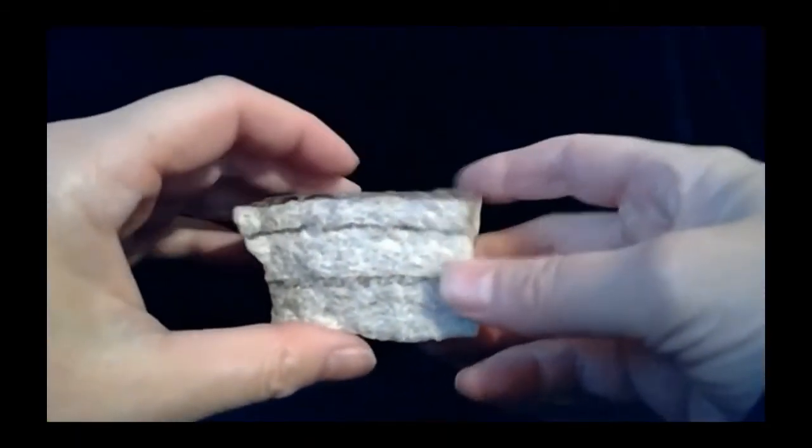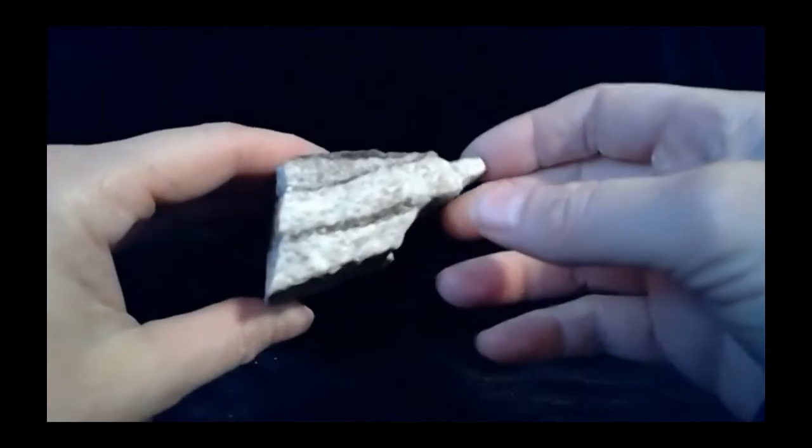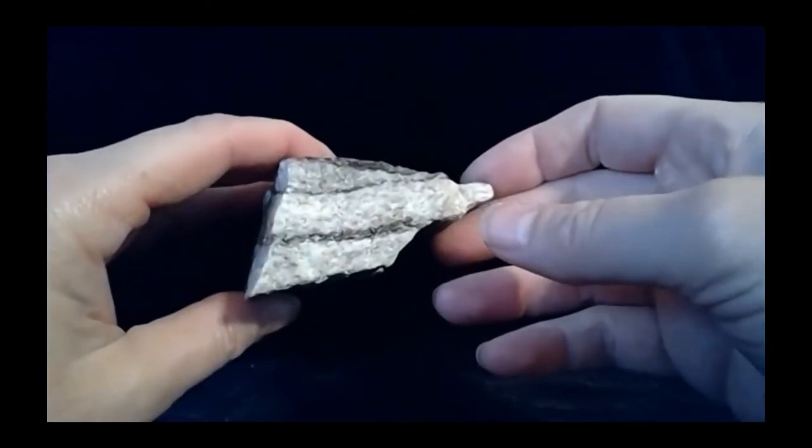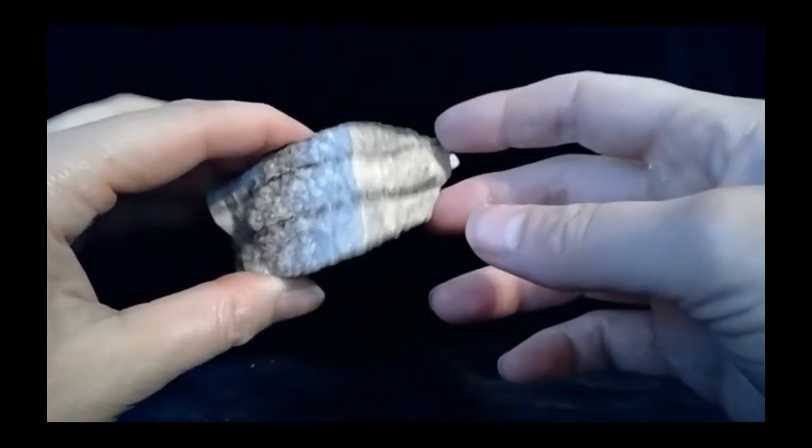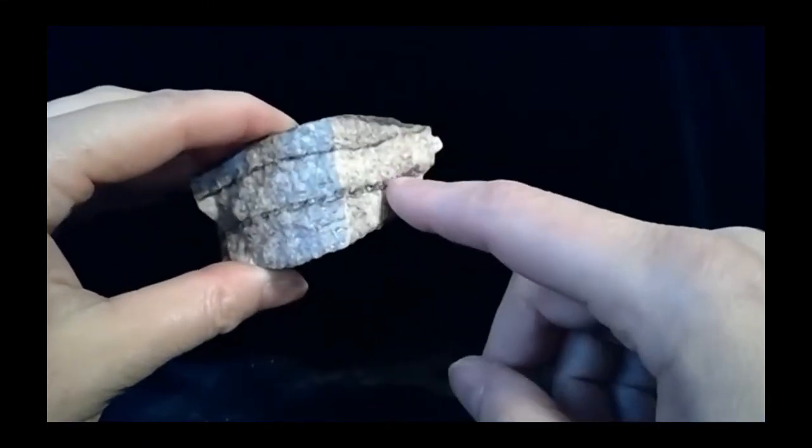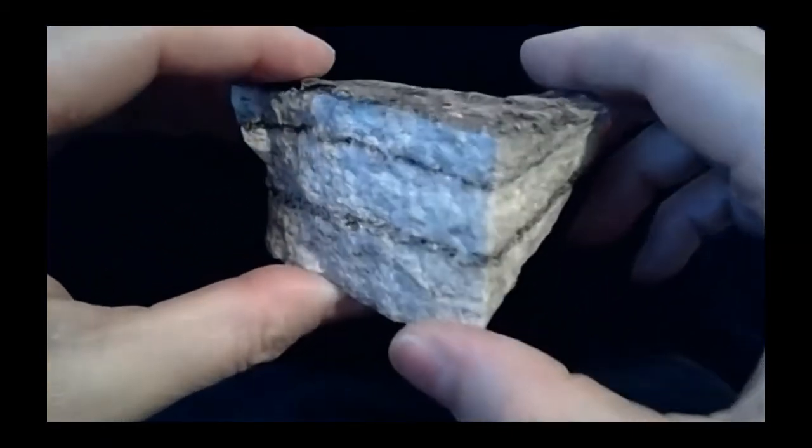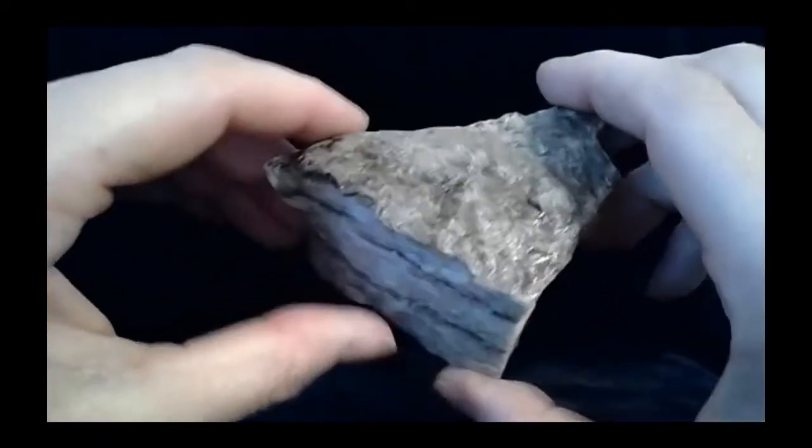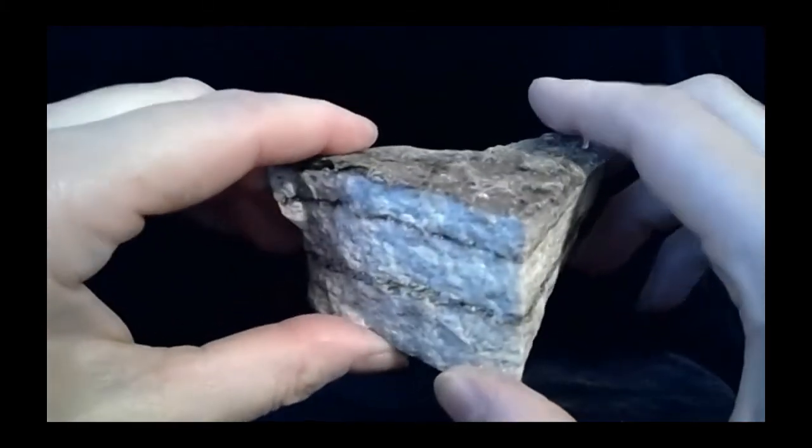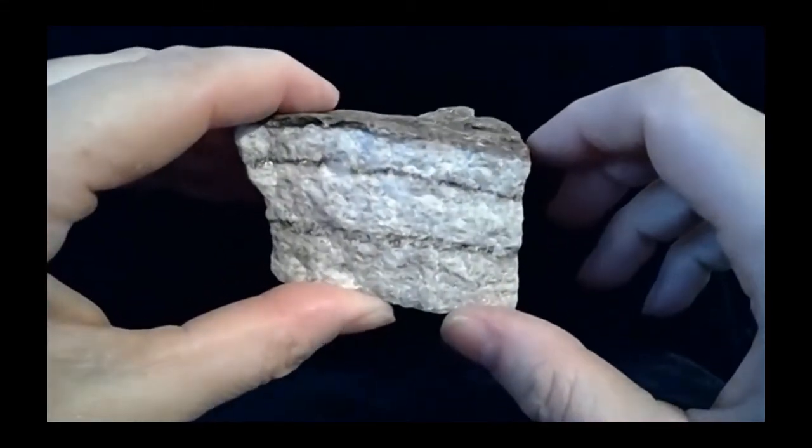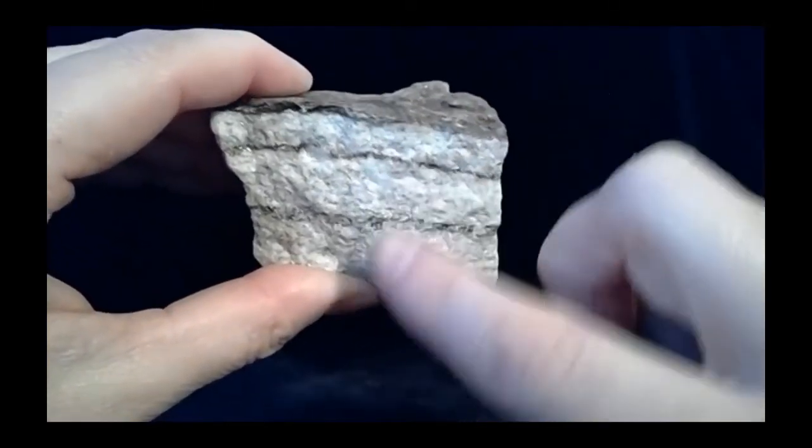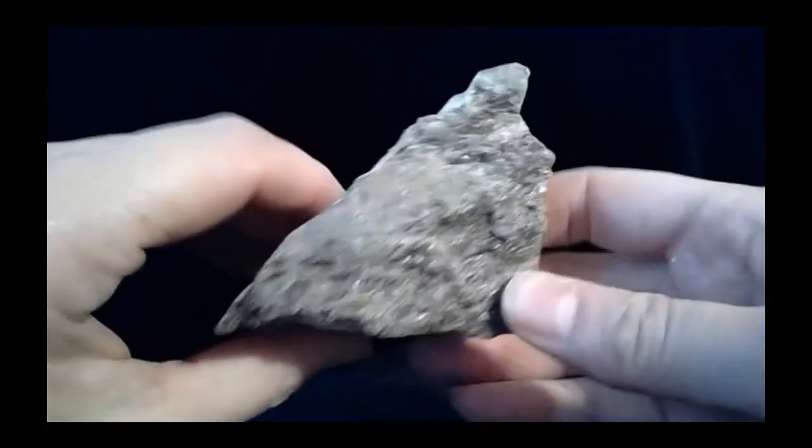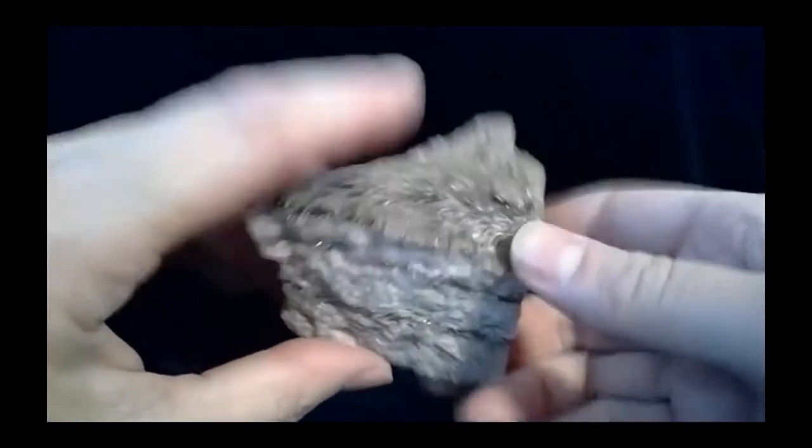And then after a schist, then we get into what's called a gneiss. And a gneiss happens when the crystals are heated up so much that they start to recrystallize into layers. So the minerals reorient themselves into layers. You can see this dark layer right here. There's a dark layer on top. Usually that's like the biotite micas and maybe some hornblende and other dark minerals that are recrystallizing into these black layers. You can see the mica shining on that surface.